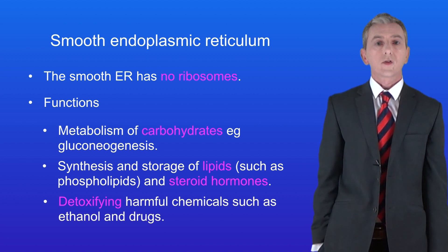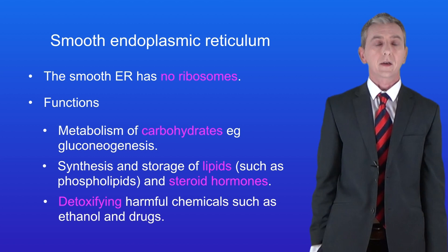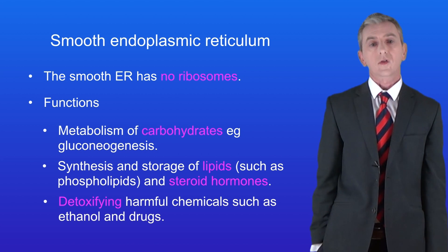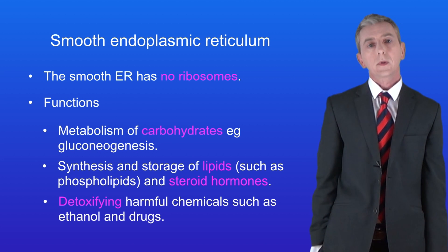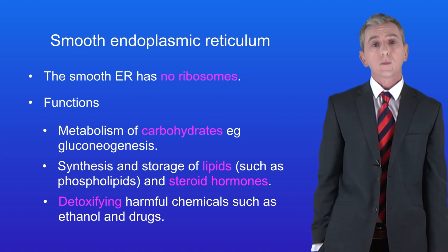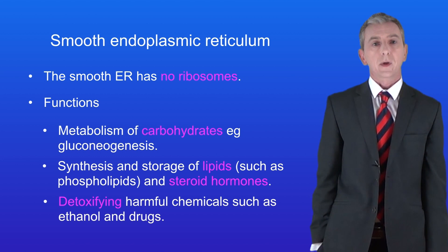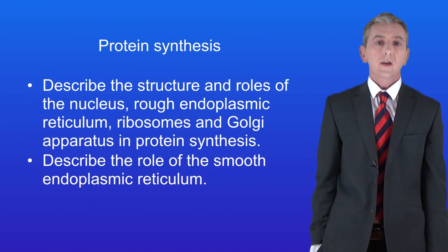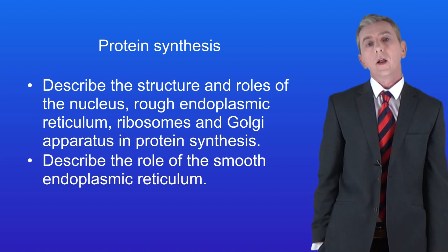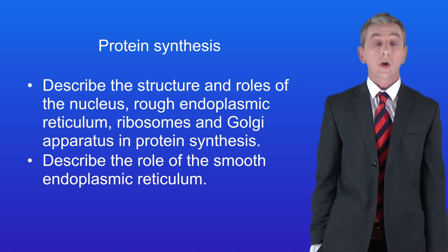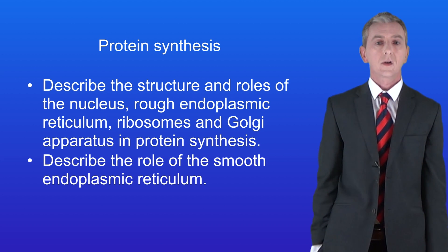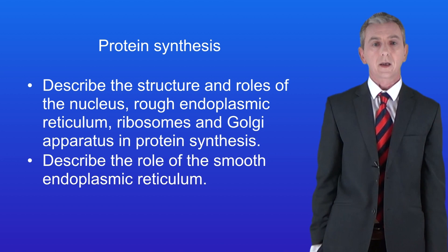Finally, the smooth ER is involved in detoxifying harmful chemicals such as ethanol and drugs. Detoxifying means breaking down into a safer form. Because of this, we find a lot of smooth ER in liver cells, since one of the roles of the liver is detoxifying chemicals. So hopefully now you should be able to describe the roles of the nucleus, the ribosomes, the rough endoplasmic reticulum and Golgi apparatus in protein synthesis, and also describe the functions of the smooth endoplasmic reticulum.